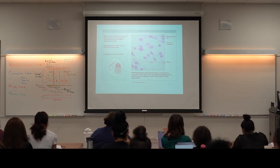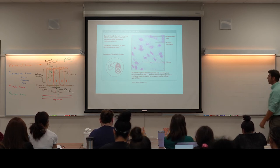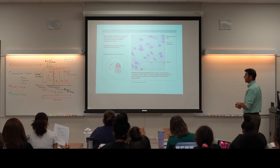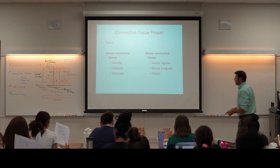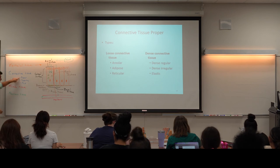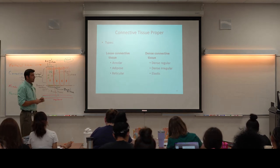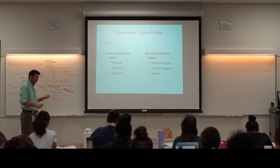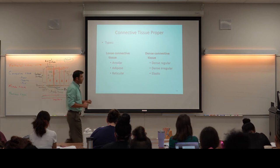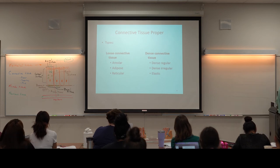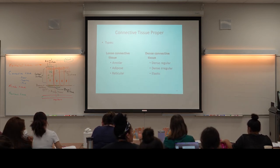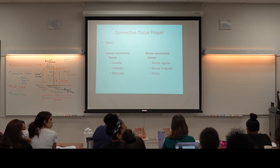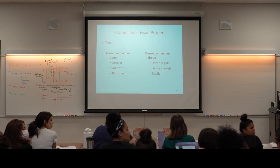Here's a picture of mesenchyme tissue — it has yet to differentiate into different types of connective tissue. All connective tissue is derived from this mesenchyme tissue. The first type of connective tissue is connective tissue proper, which is separated into loose connective tissue proper and dense connective tissue proper. There are three types of loose connective tissue, and I have the first type — areolar tissue — set up under the scope, as well as adipose and reticular tissue slides available.